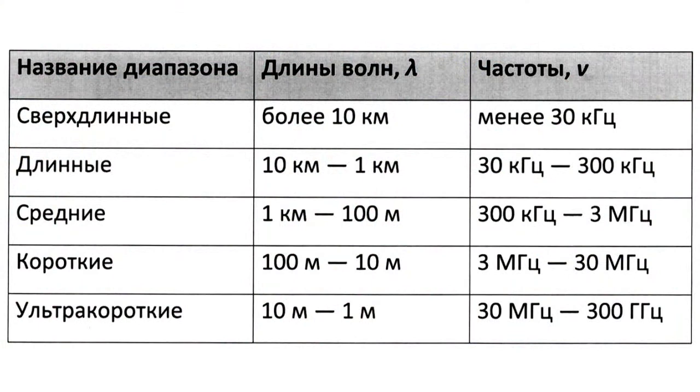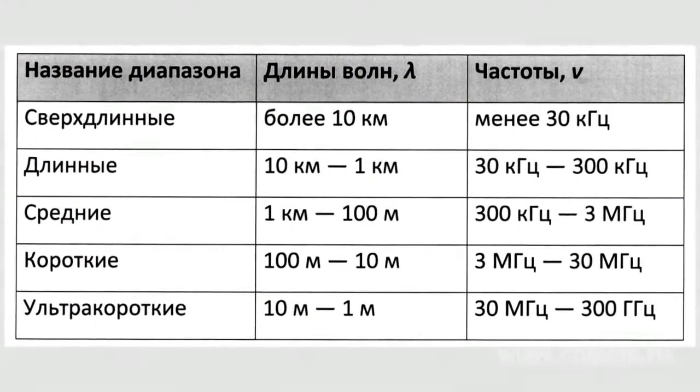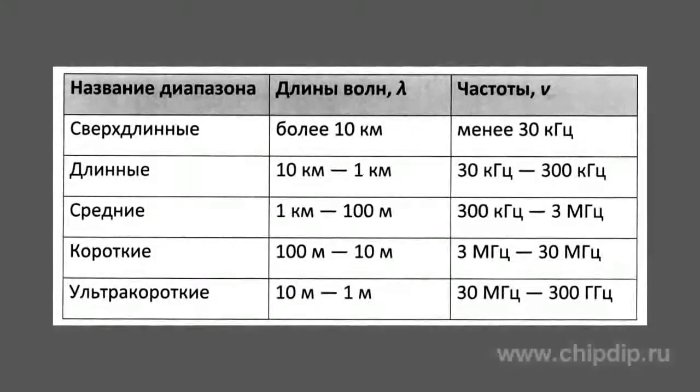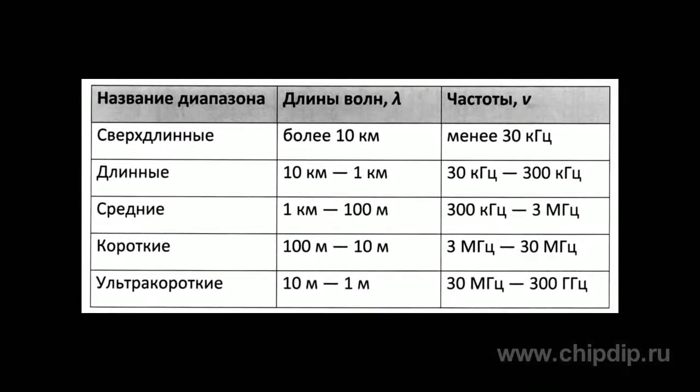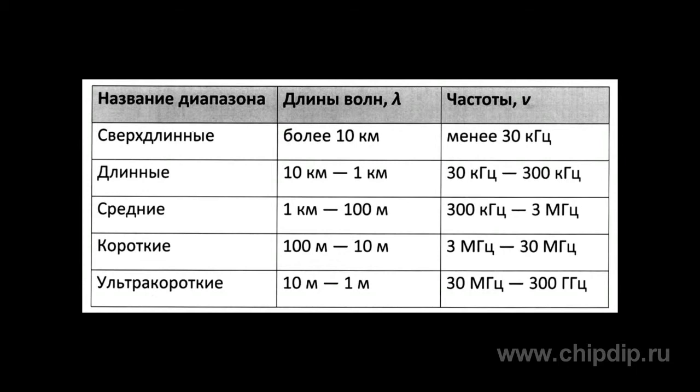High-frequency, short-wavelength radio waves cannot go around the Earth, so data is transmitted within direct line of sight. Long waves, on the other hand, can be transmitted over long distances. Radio waves are divided into five major classes by wavelength: ultra-short, short, medium, long, and super-long waves. Ultra-short waves (USW) have frequencies from 300 megahertz to 3,000 gigahertz and lengths from a tenth of a millimeter to a meter, subdivided into decimeter, centimeter waves, and others.